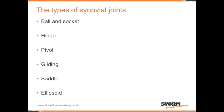There are six types of synovial joints: ball and socket, hinge, pivot, gliding, saddle, and ellipsoid. The ball and socket is the most freely movable of all the synovial joints and can be found in the shoulder and the hip.